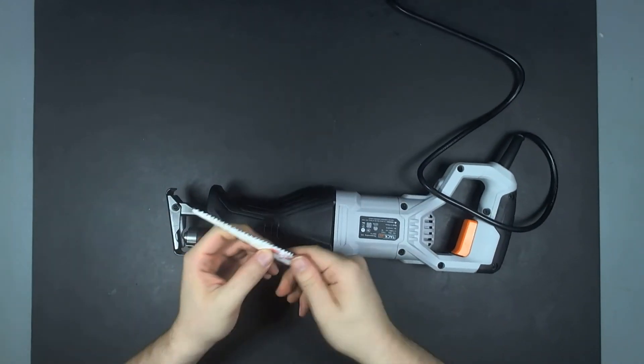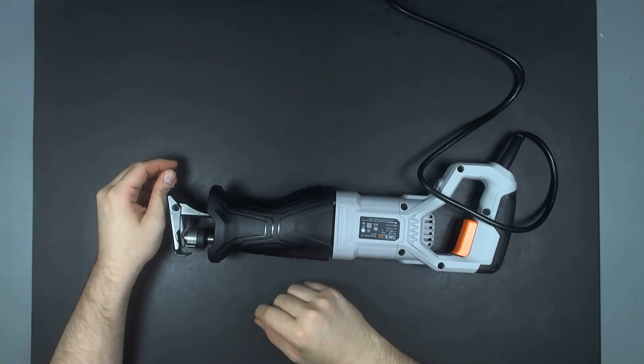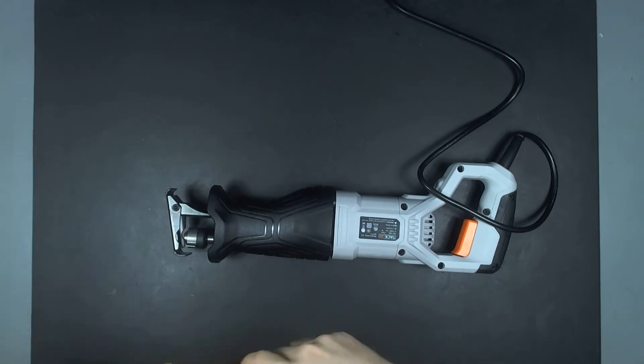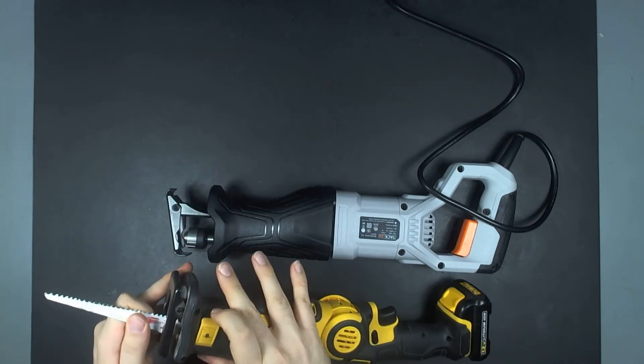For basic demolition, this thing goes through furniture and two-by-fours and old bushes and stuff plenty fast. I was using this battery-powered saw, and it works,